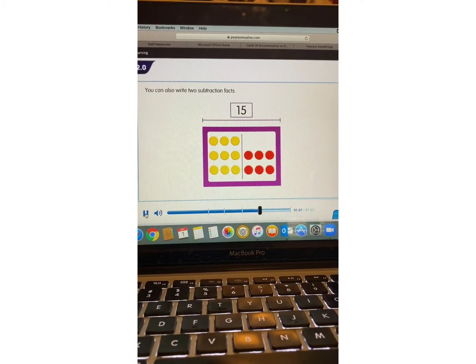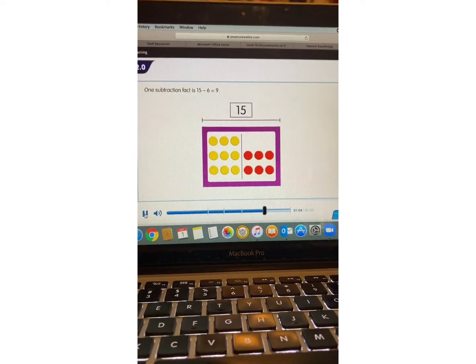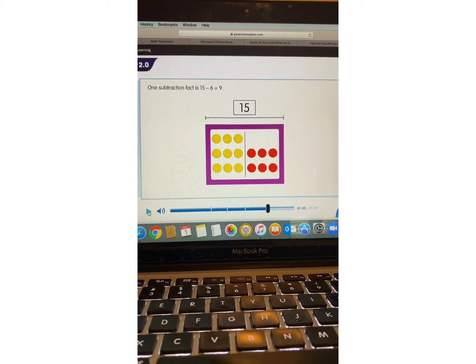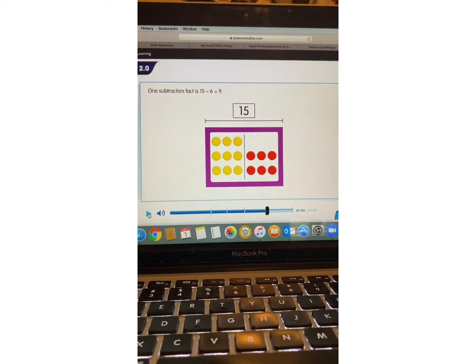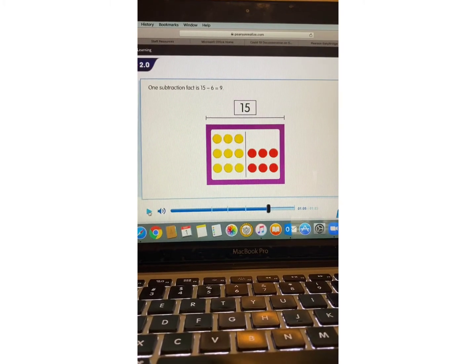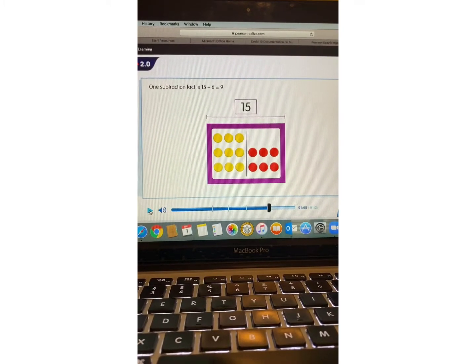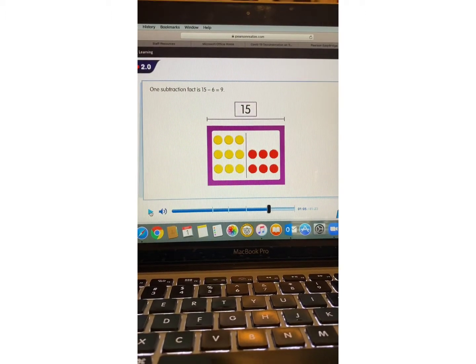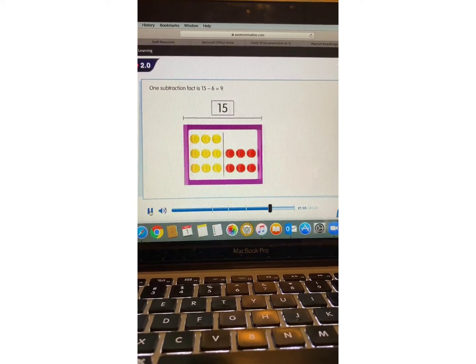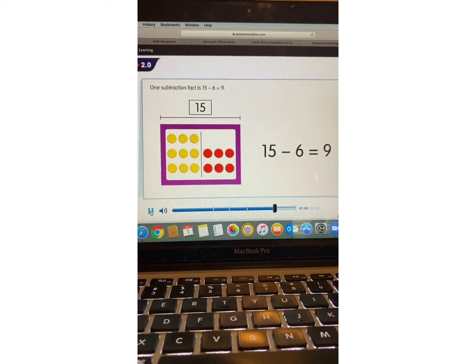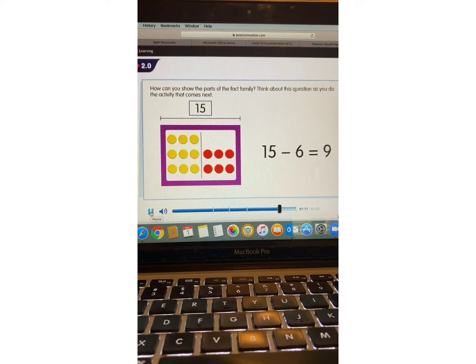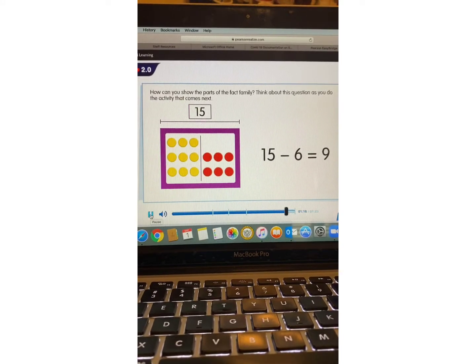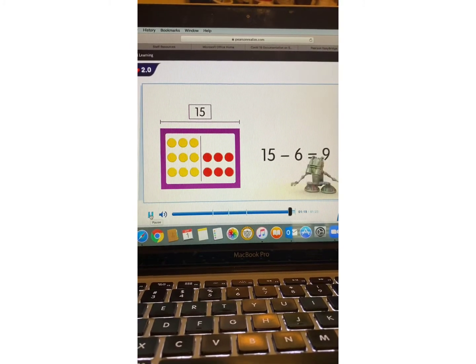You can also write two subtraction facts. What kind of subtraction fact could you write? Very good. 15 take away six equals nine. What if you take 15 take away nine? What would that equal? 15 take away six is nine. How can you show the parts of the fact family? Think about this question as you work it out.